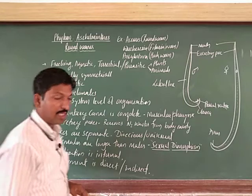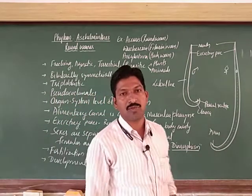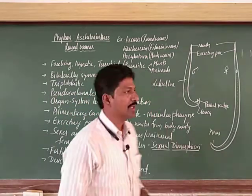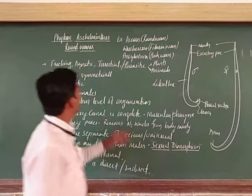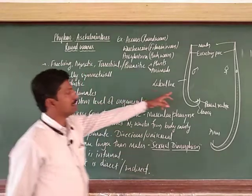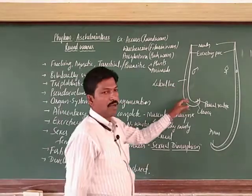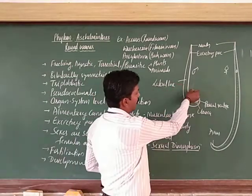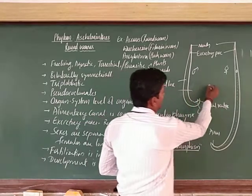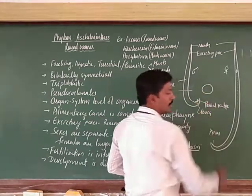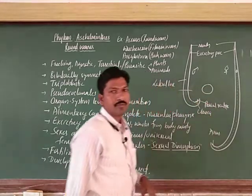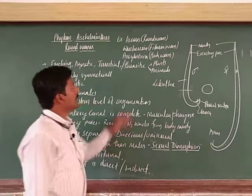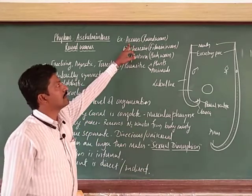These are the general features or general characters of the phylum Aschelminthes. They are commonly called roundworms because the body is cylindrical, and when you take a cross section, the body appears circular. The examples include Ascaris.